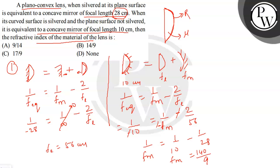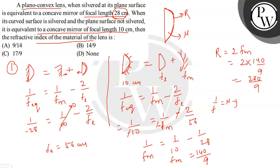The radius of curvature of the mirror equals 2 times its focal length: R = 2 × (140/9) = 280/9 cm. Now, to find the refractive index of the lens, we use the lensmaker's equation: 1/f = (mu − 1) × (1/R1 − 1/R2).